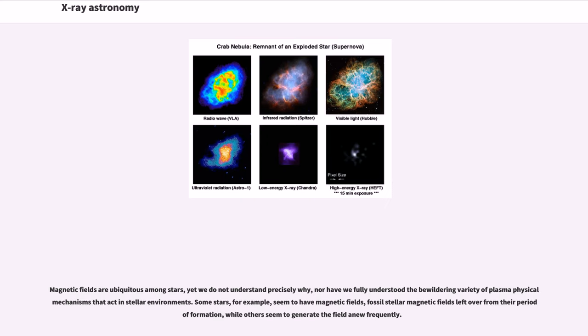As X-ray astronomy uses a major spectral probe to peer into sources, it is a valuable tool in efforts to understand many puzzles. Magnetic fields are ubiquitous among stars, yet we do not understand precisely why, nor have we fully understood the bewildering variety of plasma physical mechanisms that act in stellar environments. Some stars seem to have fossil stellar magnetic fields left over from their period of formation, while others seem to generate the field anew frequently.